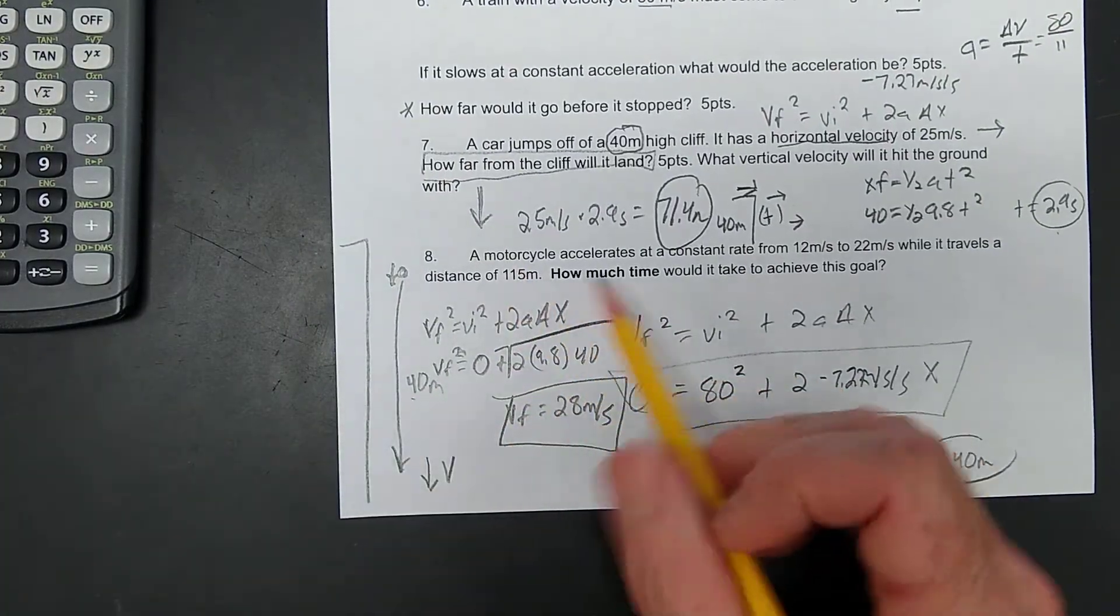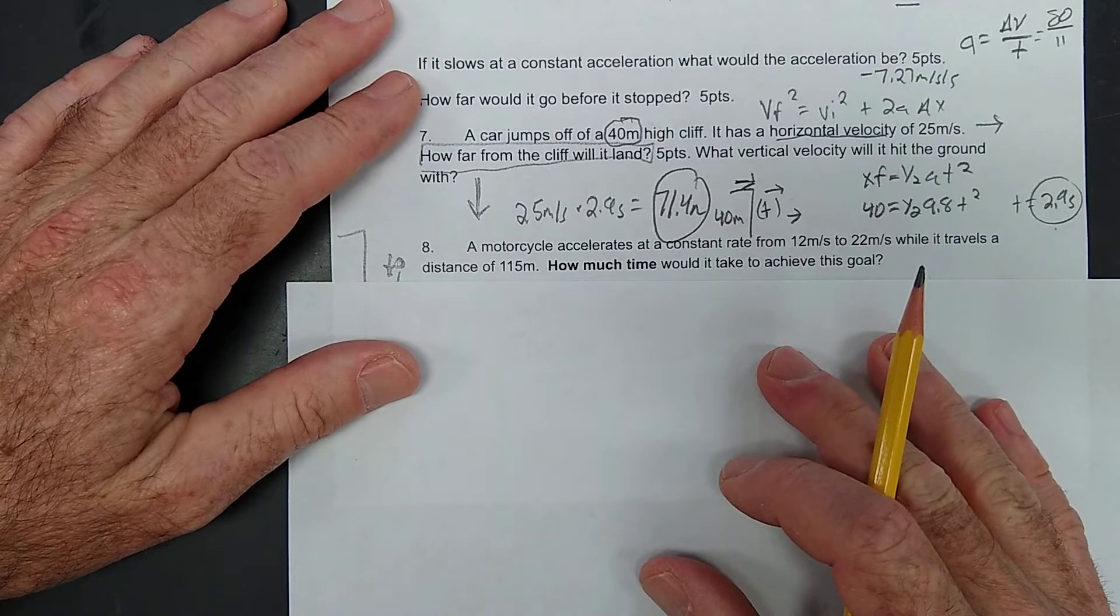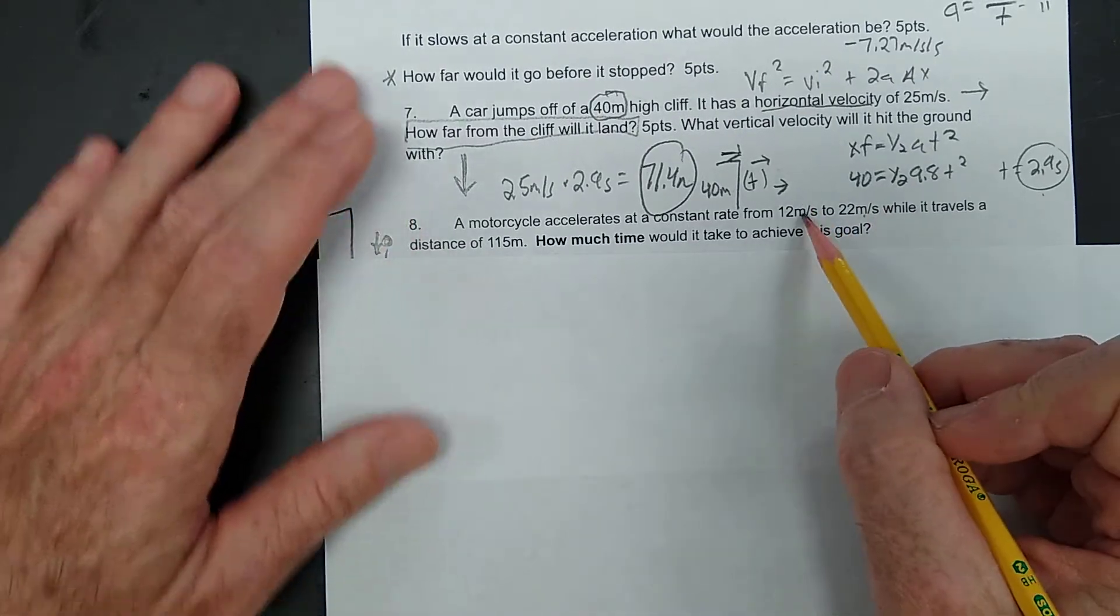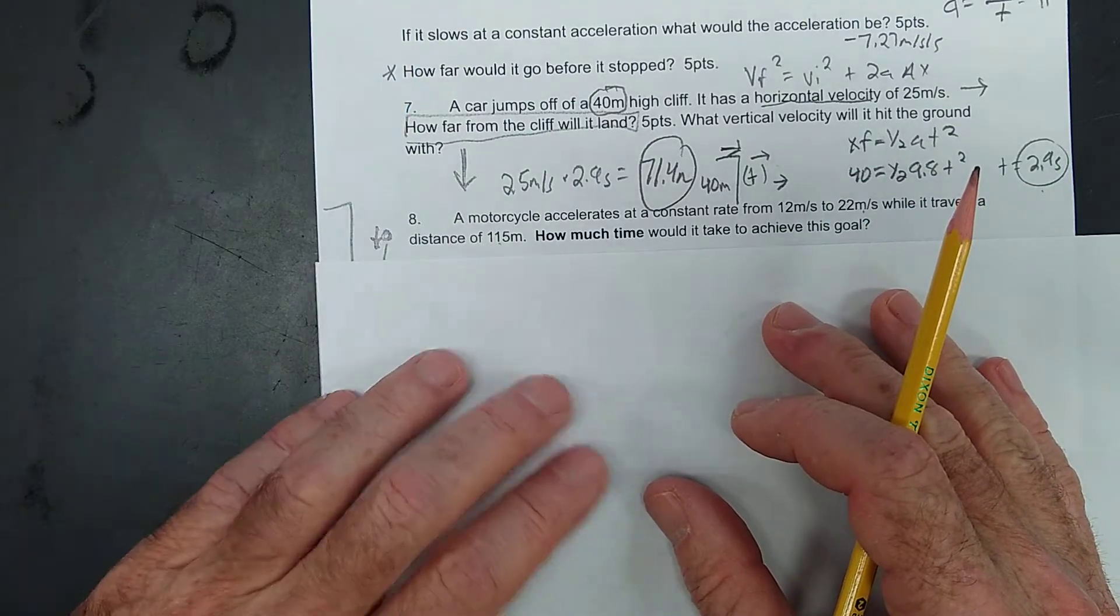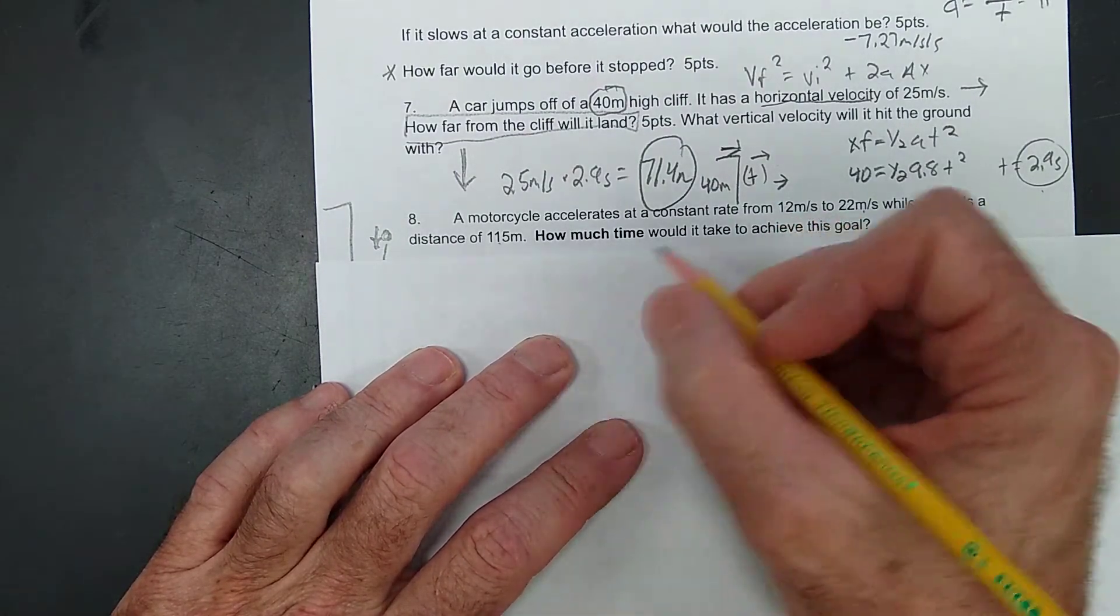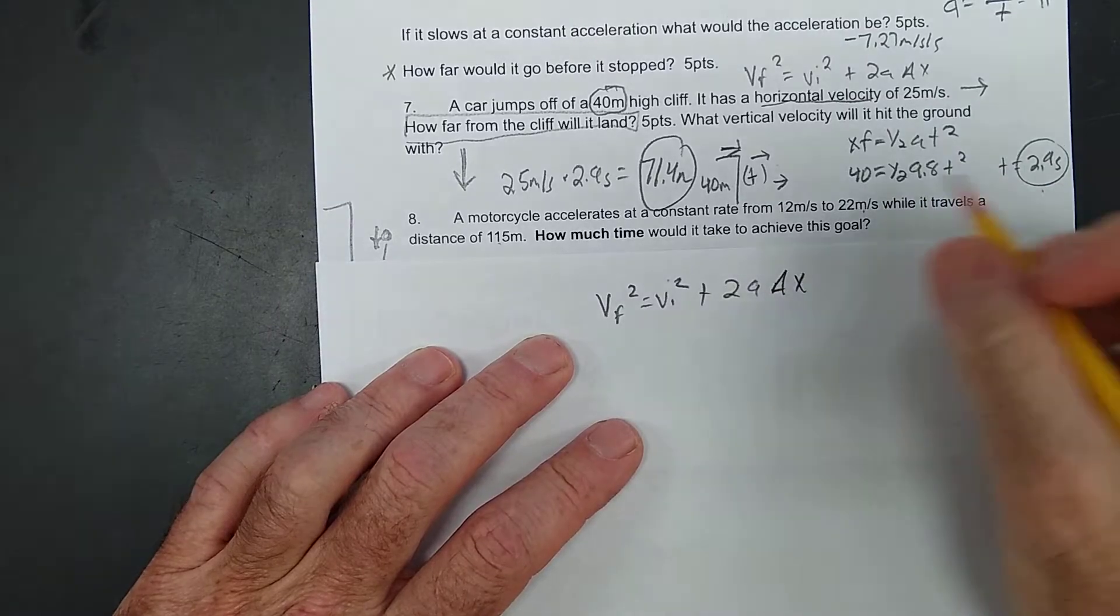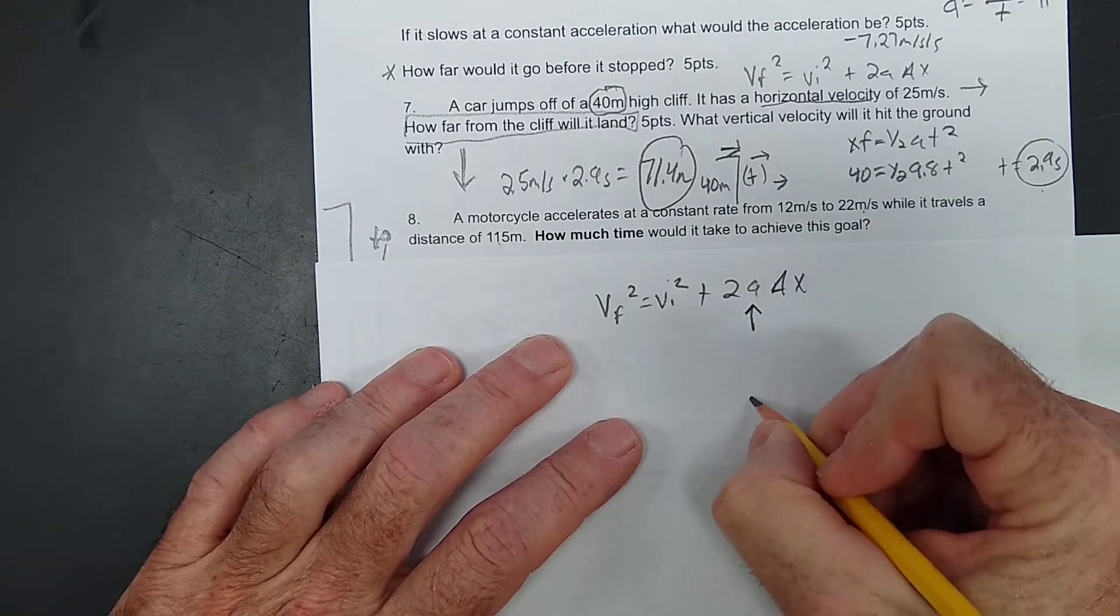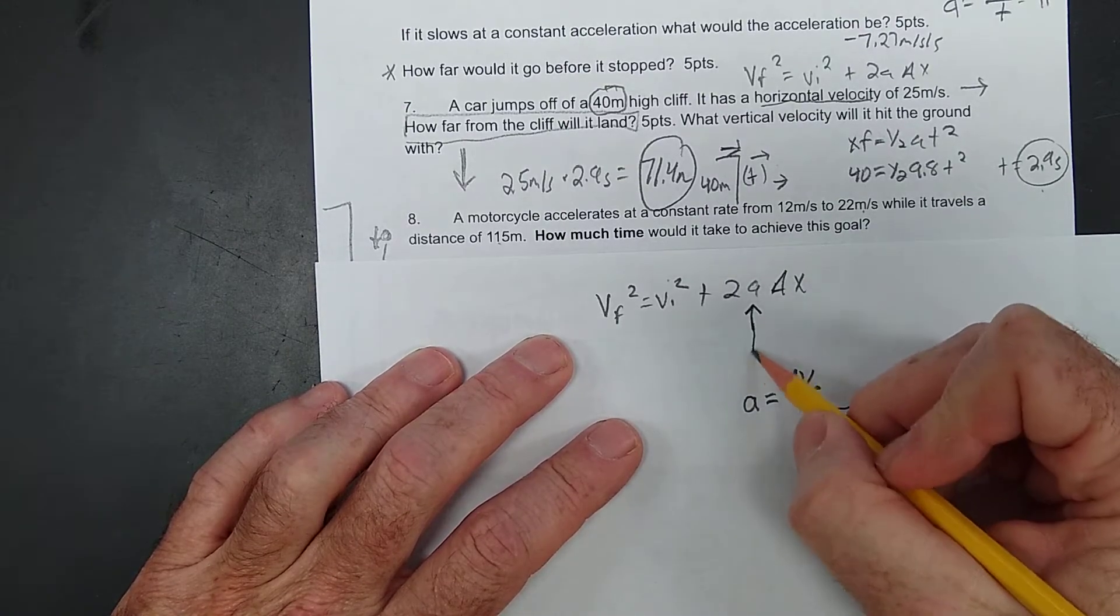Let's see. Number 8. A motorcycle accelerates from 12 to 22 while it travels 115 meters. How much time would it take to achieve this goal? Alright. So, we have a VF, a VI, and an X, and we're looking for a T. How much time would it take to achieve this goal? Well, this is, you haven't done one like this. I can solve this for you. VF squared equals VI squared plus 2A delta X. There will not be one like this on the test. But, if you want to see this solved, what we're going to do is solve for this A, and then just put the A into A is equal to delta V over T. And we're going to solve for the T there. Does that make sense? We're going to combo these two formulas.